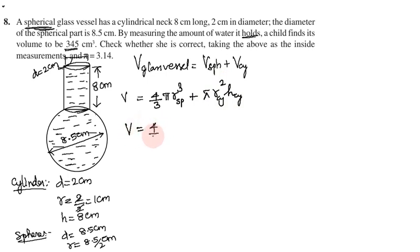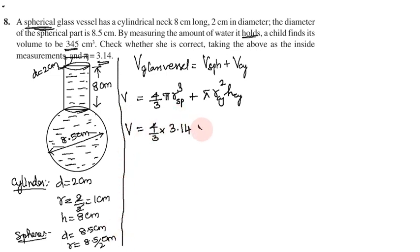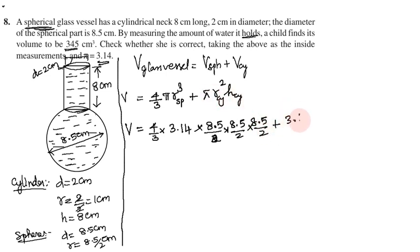Substituting values: (4/3) × 3.14 × (8.5/2)³ + 3.14 × (1)² × 8. The radius of the sphere is 8.5/2, applied three times as r³, and the cylinder radius r is 1 with height h = 8.